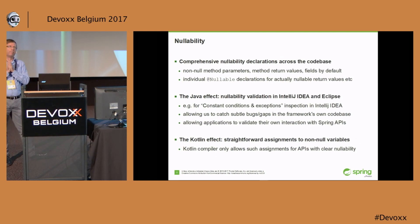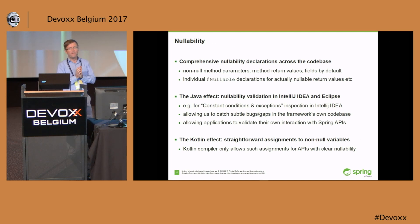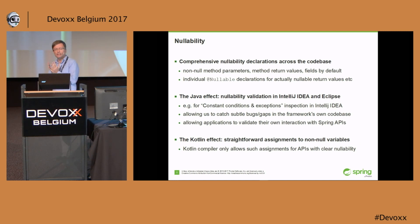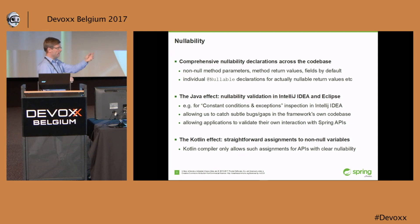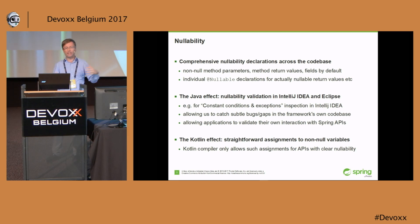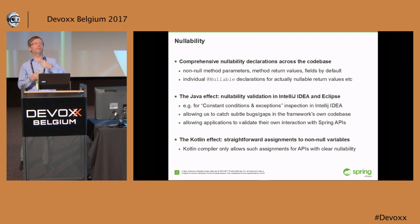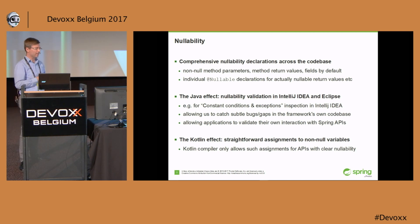Different kind of problem, closer to the source code experience: nullability. In traditional Java code, of course, we are used to nulls — nulls passing in, trying to pass nulls in somewhere, getting nulls out of it. Getting nulls out of an API — returned from an API — is a particularly hard one.